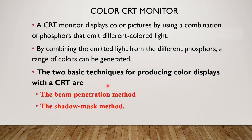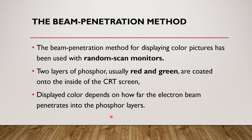We can use two methods to produce color displays. The first one is the beam penetration method, and the second one is the shadow mask method. In this video, we will discuss the beam penetration method. The beam penetration method for displaying color pictures has been used with random scan monitors.